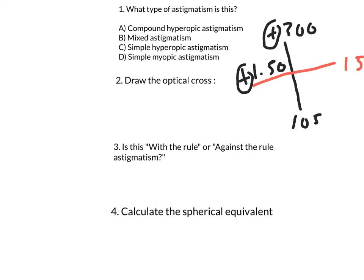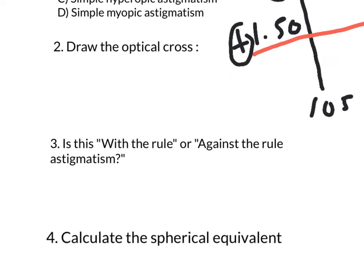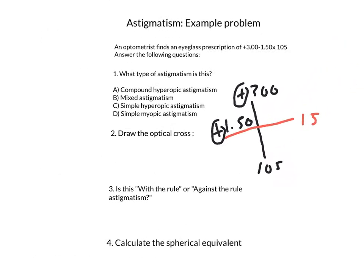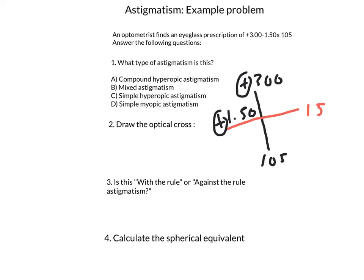Is this with-the-rule astigmatism or against-the-rule astigmatism? Because the axis is 105, and 105 is only 15 degrees from 90, it is within 30 degrees of 90. Therefore, this is against-the-rule astigmatism.